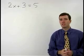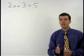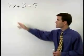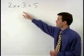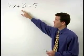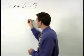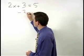Our first step will be to isolate the term containing x, which in this case is 2x. To isolate 2x, we have to get rid of this plus 3 by subtracting 3 from both sides of the equation.